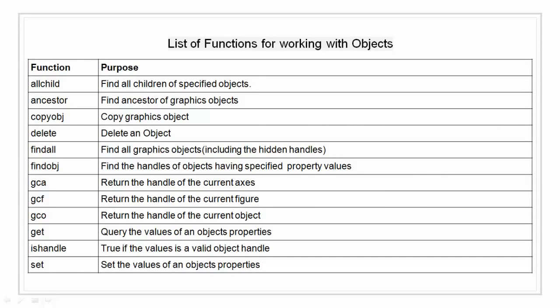Here is a list of commonly used functions when working with objects or graphic objects. We have allchild that finds all the children of specified objects. We have ancestor that finds the ancestor of graphics objects. We have copyobj that copies graphic objects. We have delete that deletes an object. We have findall that finds all the graphic objects including the hidden handles.